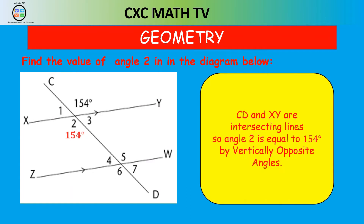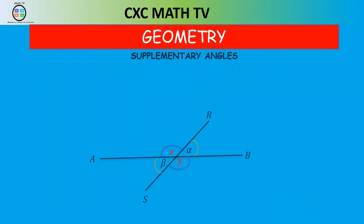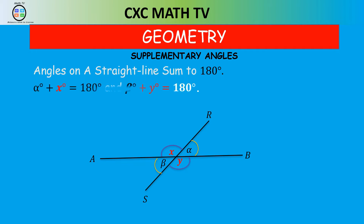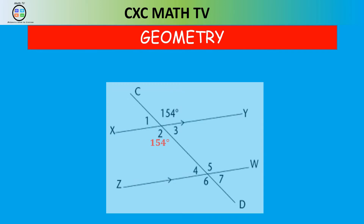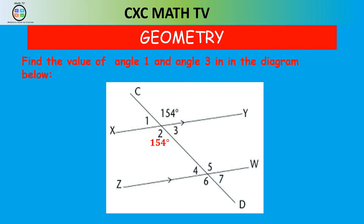The next law is that angles on a straight line sum to 180 degrees — we call these supplementary angles. We notice that x plus alpha is 180 degrees, and below the straight line AB, beta plus y equals 180 degrees. Going back to the picture, we found angle 2. What is the value of angle 1 and angle 3?